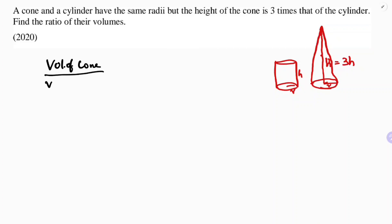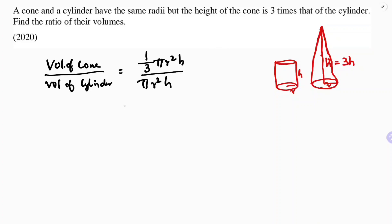Volume of cone divided by volume of cylinder. Volume of cone is 1/3 π r² h. Volume of cylinder is π r² h. Now considering the radius directly, we can substitute in place of h, using 3h for the cone's height.